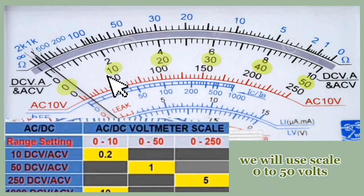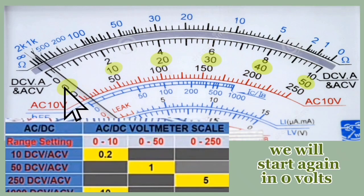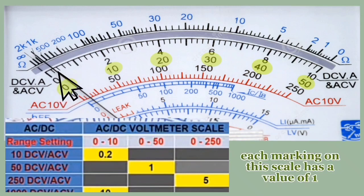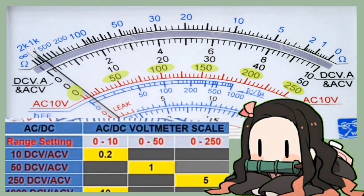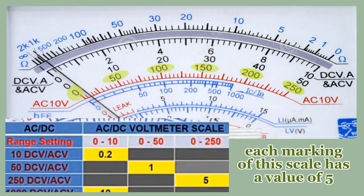Now let's move on to 50 volts. We will use scale 0 to 50 volts. Each marking on the scale has a value of 1. We will start again at 0 volts: 0, 1, 2, 3, 4, and 5, 6, 7, 8, 9, and 10, and so on.